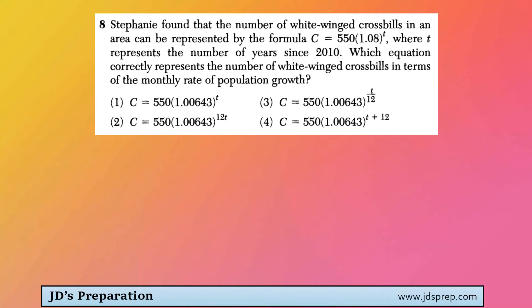In this question, the number of white-winged crossbills in an area is represented by the formula C = 550(1.08)^T, where T represents the number of years. We need to figure out which equation represents the number of white-winged crossbills in terms of the monthly rate of population growth.